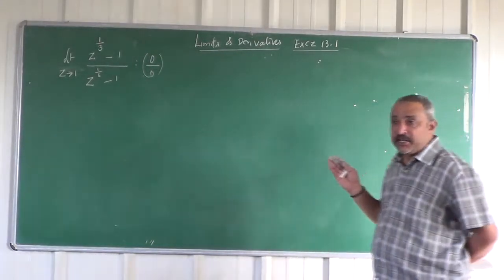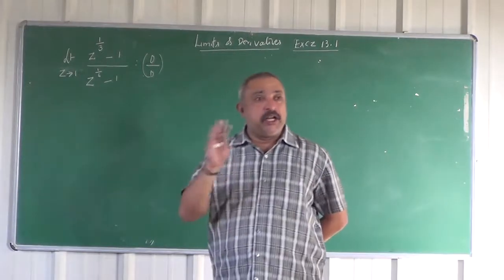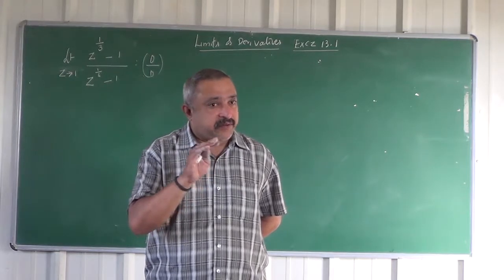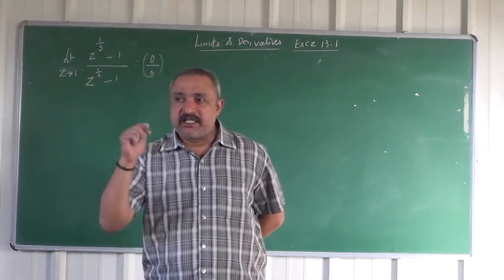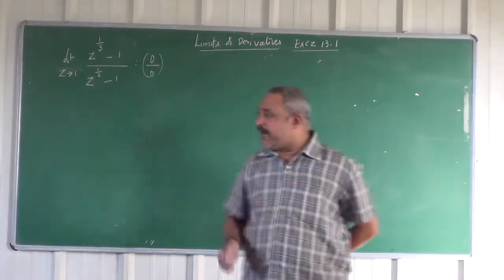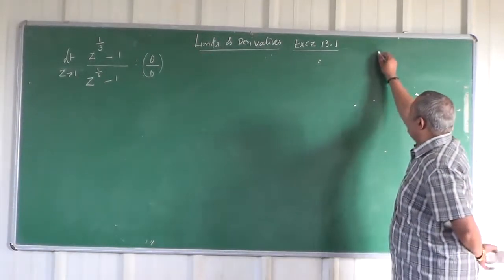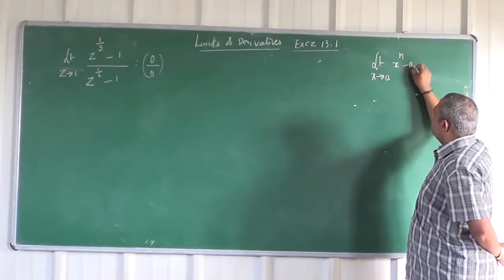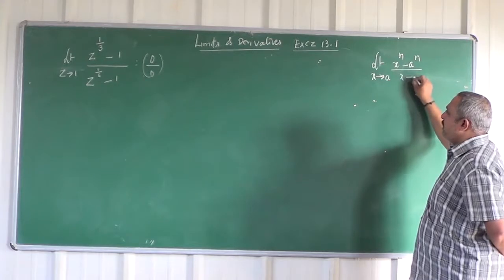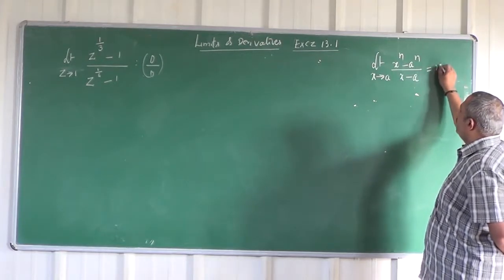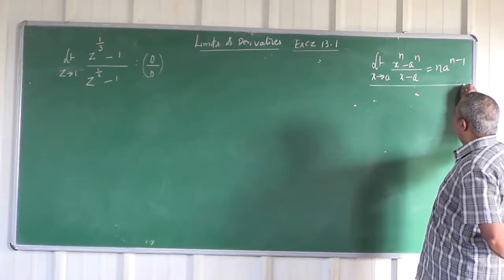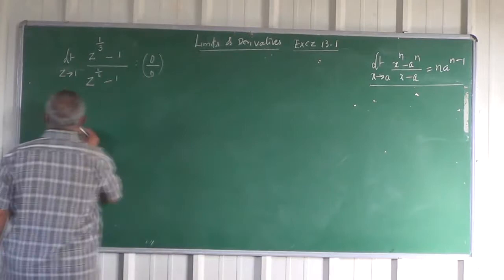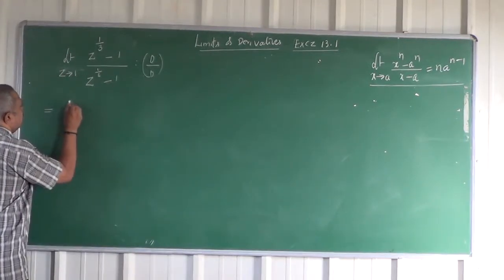There is no factorization available here, but still you can think of factorization in this problem. That is why this is a special case. Or otherwise, normally it is to match with the form limit X tending to A, X to the power of N minus A to the power of N divided by X minus A.